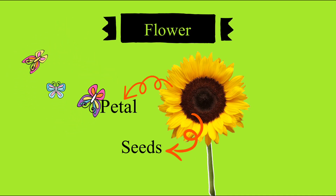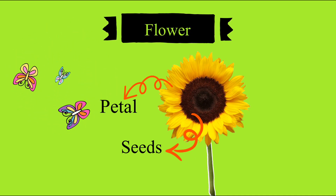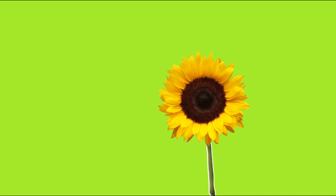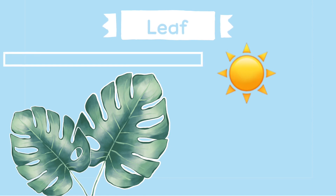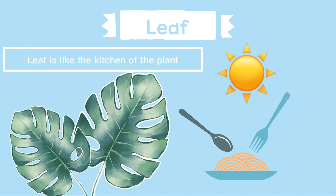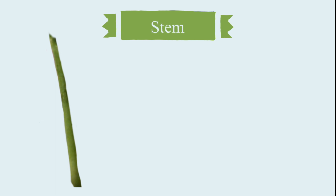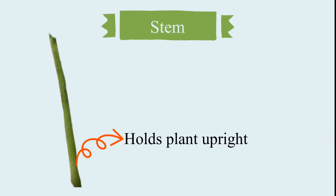As they are colorful and smell lovely, they attract butterflies and honeybees. The leaves absorb sunlight from the sun and help prepare food for the plants.